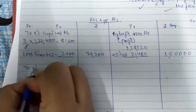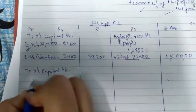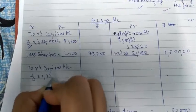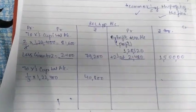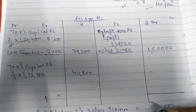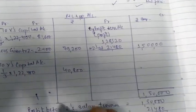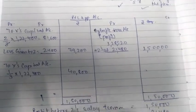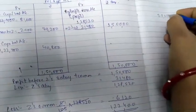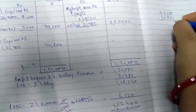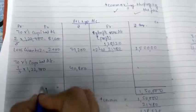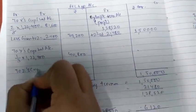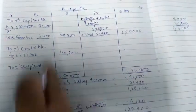After this, Y's capital account. His was 1 by 3 of 1,22,400. This becomes 40,800. Let's check the balance. This is 1,50,000. This is also 1,50,000. When we add 79,200 and 40,800, we get 1,20,000. This will be Z's capital, which is 30,000. Total 1,50,000.